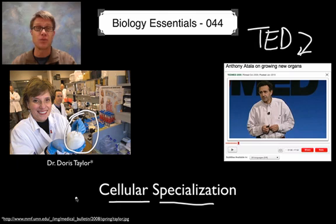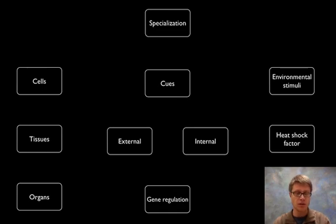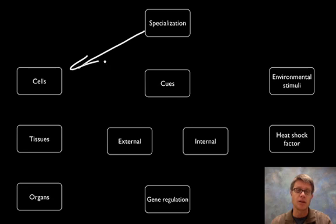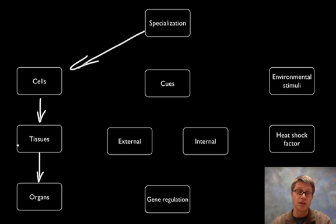But first, let's start with how does this all work. Where do cells start and how do they eventually become organs? Cells organize themselves into tissues — that's a bunch of cells that do the same job — and then those eventually become organs. An example would be one cardiac muscle cell making up cardiac muscle tissue, which eventually makes a heart.